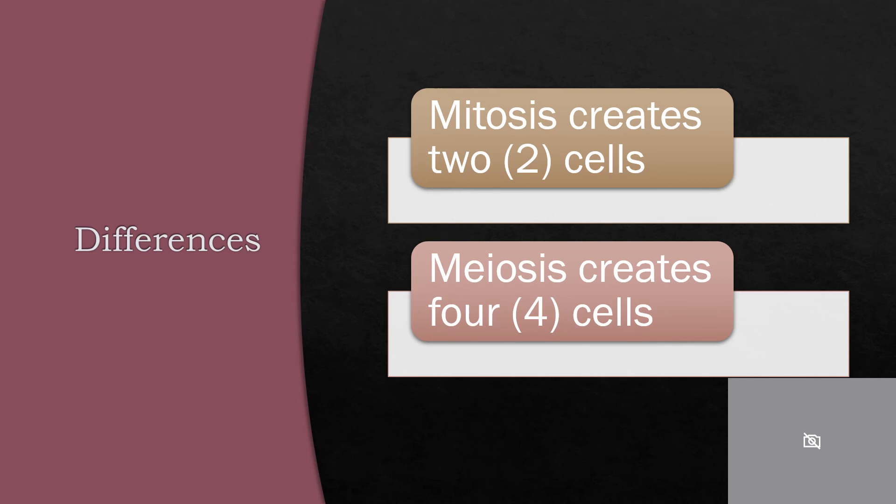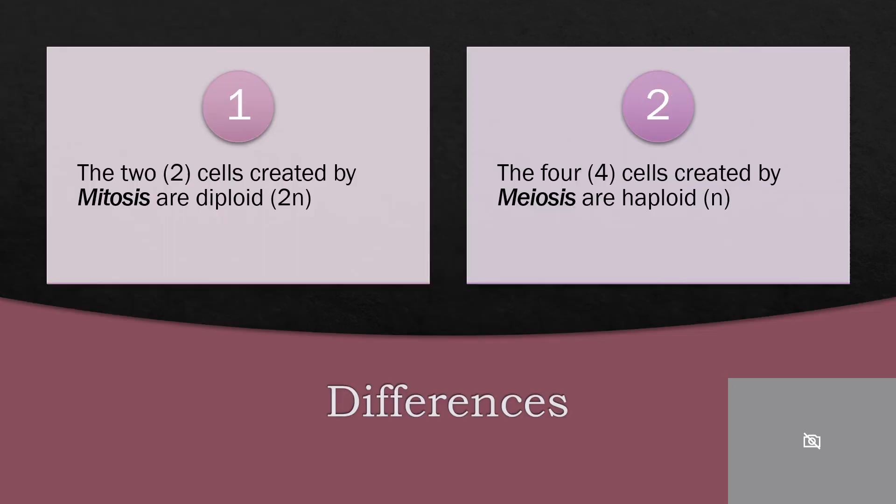Mitosis creates two cells, while meiosis creates four cells. The two cells created by mitosis are diploids, and the four cells created by meiosis are haploids.